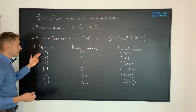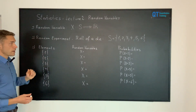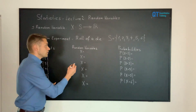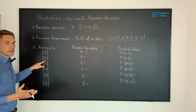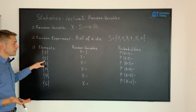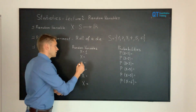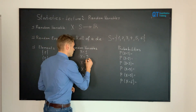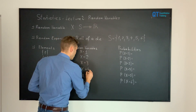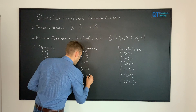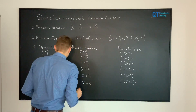Having the singleton one, we define the random variable X equals one. For the element singleton two, we take X equals two, then X equals three for the third element, four for the fourth element, five for the fifth element, and six for the sixth element.